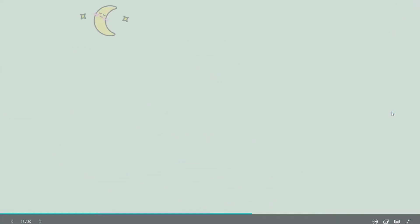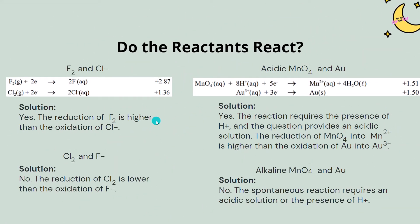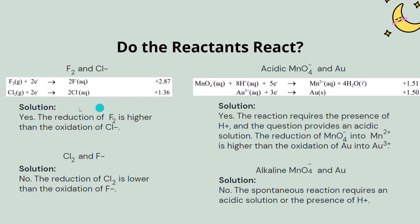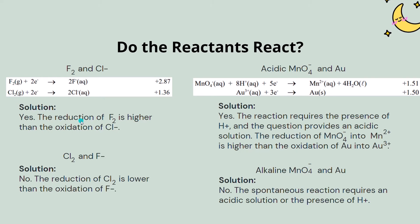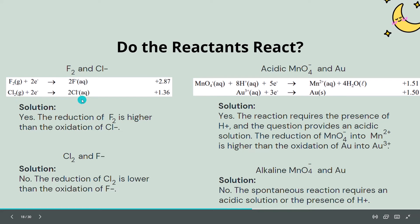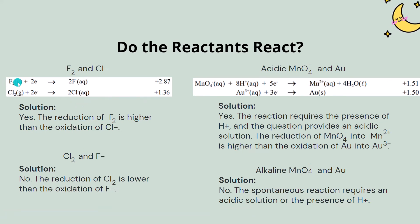Let's look at some examples. Do F2 and Cl⁻ react? We see that F2 is above Cl⁻ on the table, so yes — the reduction of F2 is higher than the oxidation of Cl⁻. What about Cl2 and F⁻? No, because the reduction of Cl2 is lower than the oxidation of F⁻.